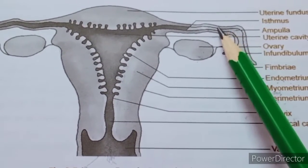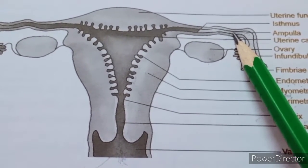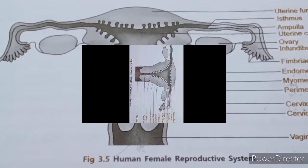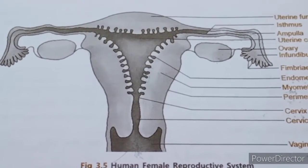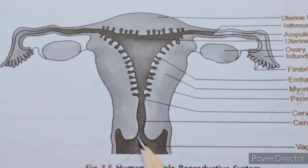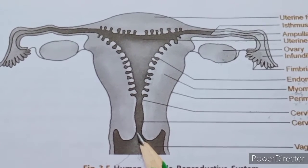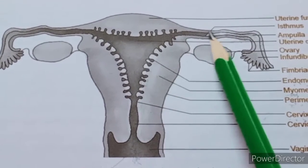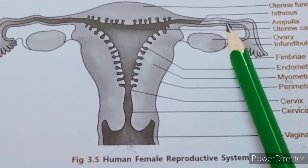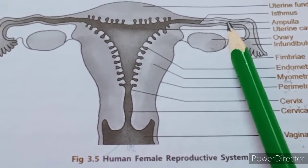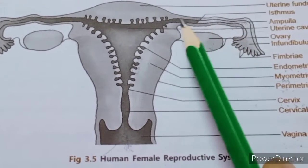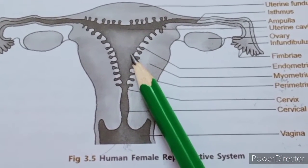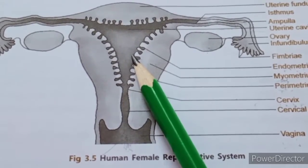The egg waits in the fallopian tube for a few days for fertilization. During copulation or intercourse, if semen is introduced into the vagina, the sperm swim up and reach the fallopian tube, where fertilization with the ovum occurs. After fertilization, the egg is transferred to the uterus for implantation — that is, attachment to the uterine wall.